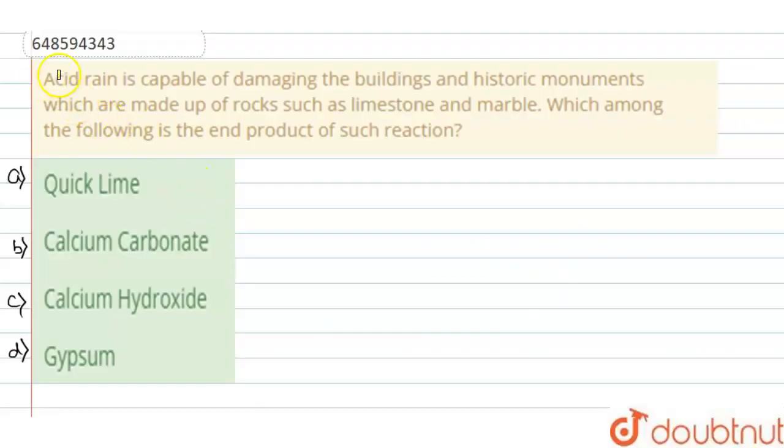Hello, here the question is: Acid rain is capable of damaging the buildings and historic monuments which are made up of rocks such as limestone and marble. Which among the following is the end product of such reaction? The options are option A, quick lime, option B, calcium carbonate, option C, calcium hydroxide, and option D, gypsum.